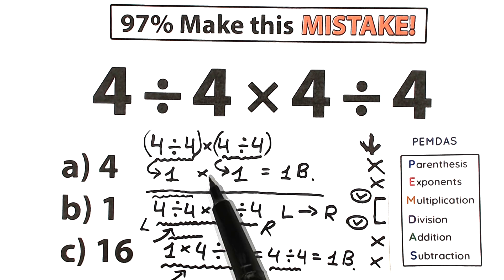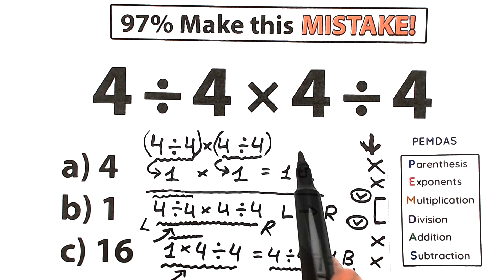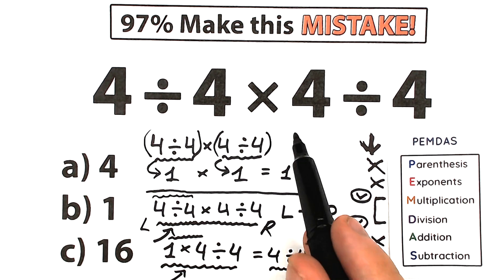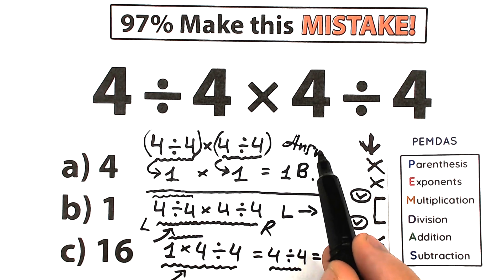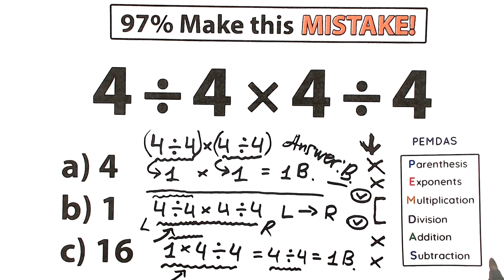Learn and apply PMDMC — it's a really solid order of operations. When you face any numerical expression, apply it step by step and you'll get better through practice. The correct answer to this challenge is option B, and the correct solution is the left-to-right PMDMC approach.